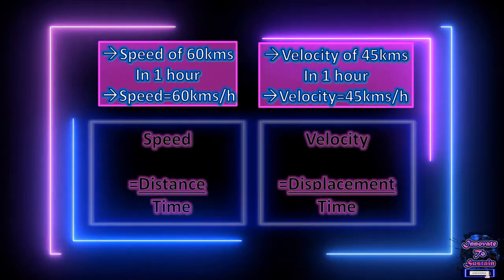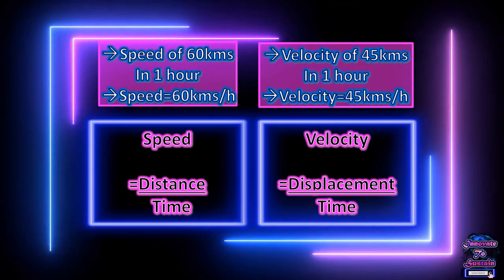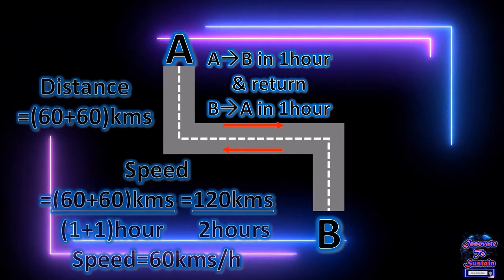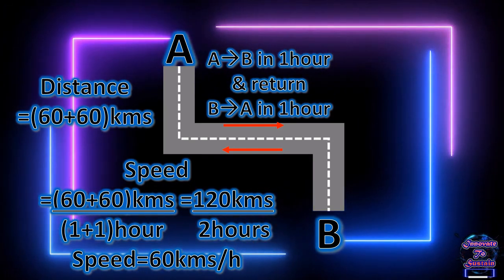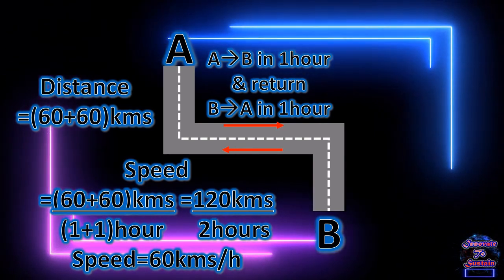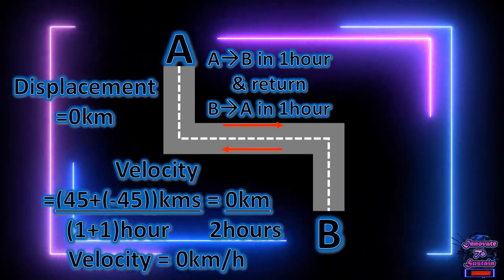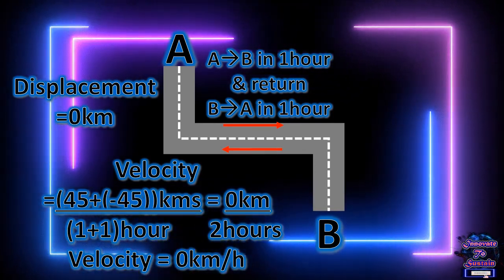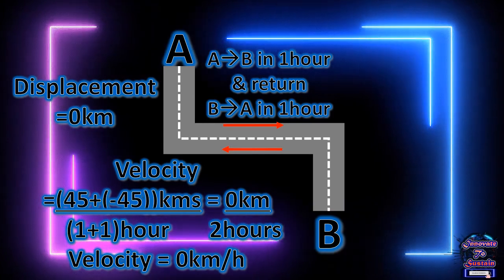Thus the formulas: speed equals distance over time, and velocity equals displacement over time. To be more clear, let's have the car travel back to village A in another one hour. The total distance is 60 plus 60 kilometers in 2 hours, giving a speed of 60 kilometers per hour. The car has returned to its starting point, so the resultant displacement is zero: 45 plus negative 45, divided by 2 hours, equals 0 kilometers per hour.